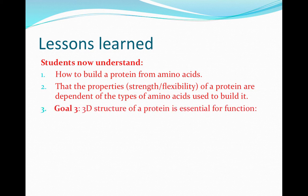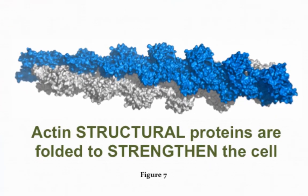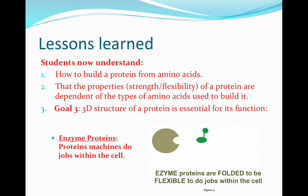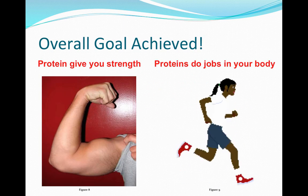They also now understand how important the 3D structure of a protein is for the function of that protein. If you want a strong structural protein in your bones and muscles, you need a lot of folding to give you that strength and support. If you want an enzyme protein — a machine that does a job like taking apart one molecule into two molecules — you need flexibility. And finally, I hope my students now understand the overall purpose of proteins: that they give you strength and that they allow your body to do jobs.